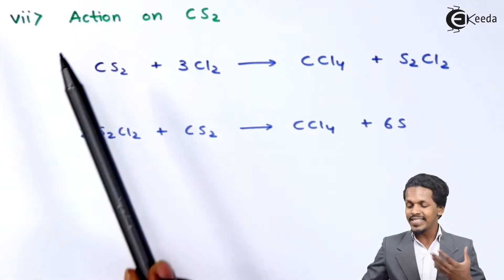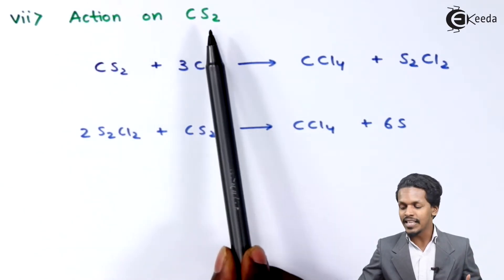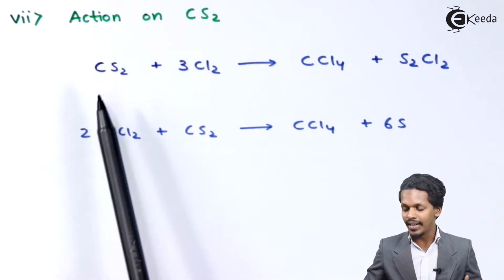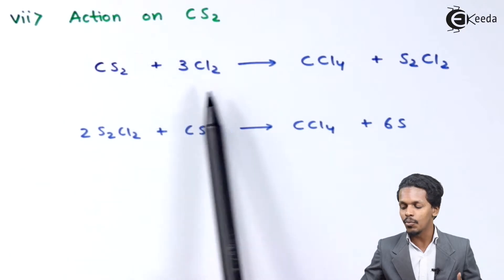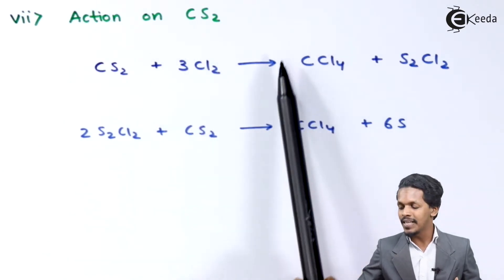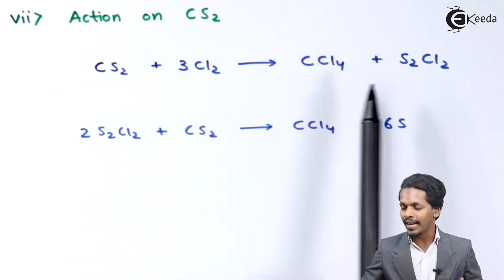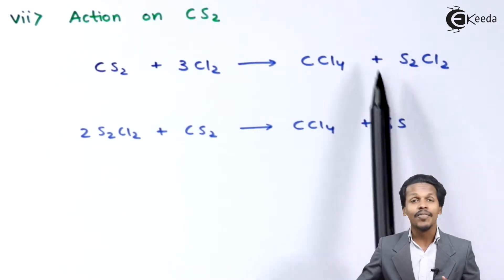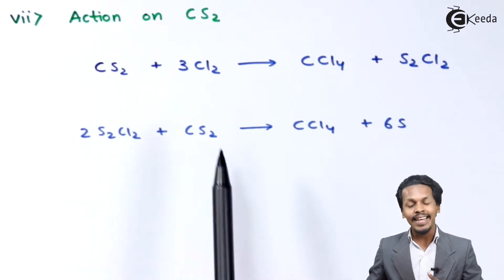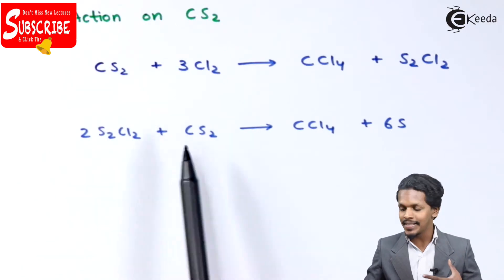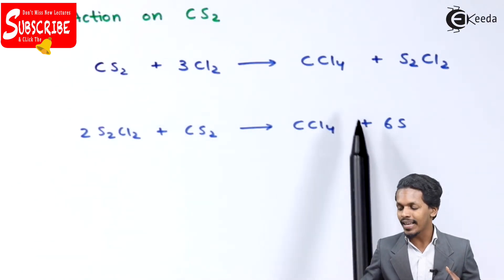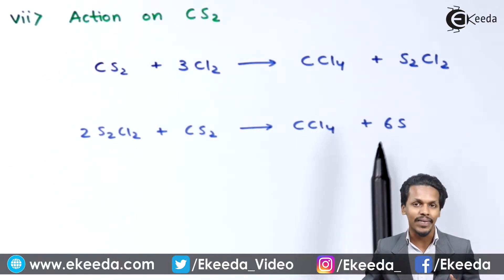The reaction is the action of chlorine on CS2, that is carbon disulfide. Whenever CS2 is reacted with 3 moles of Cl2, it forms CCl4, that is carbon tetrachloride, along with S2Cl2, which is known as sulfur monochloride. But this sulfur monochloride can react with the remaining CS2 so as to form CCl4 again along with 6 moles of sulfur.